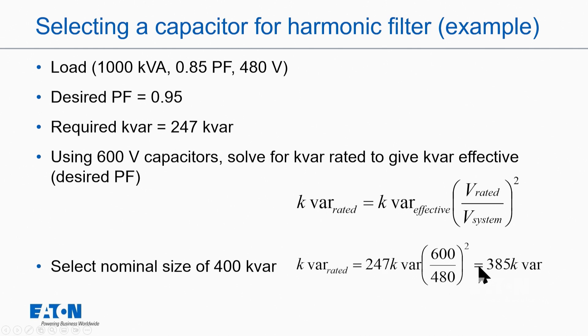divide by my applied voltage squared, I get 385. So in order to get the amount I need out of it, I'm going to go with a nominal 400 kvar capacitor.